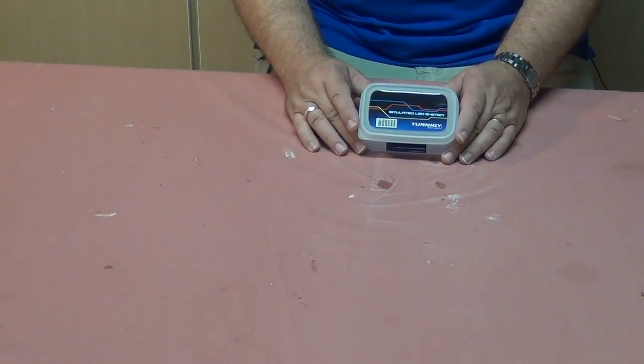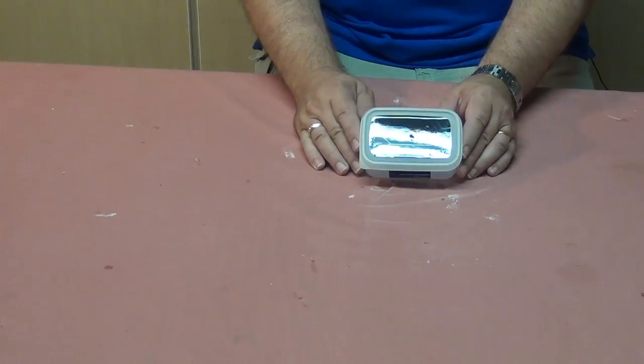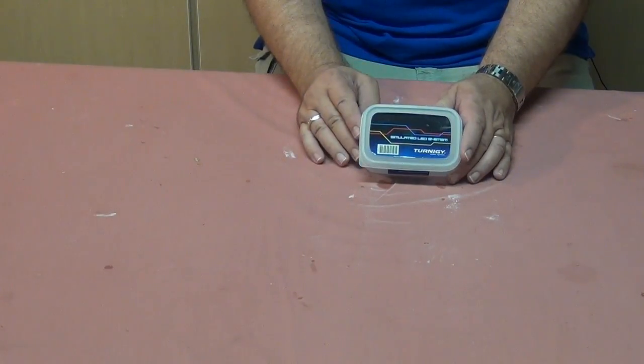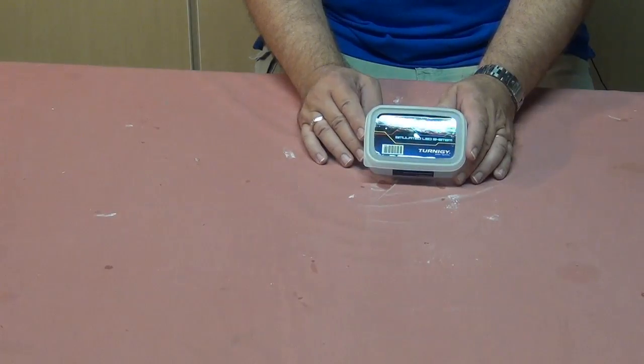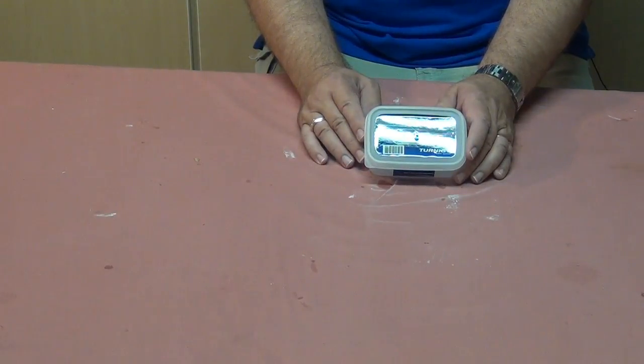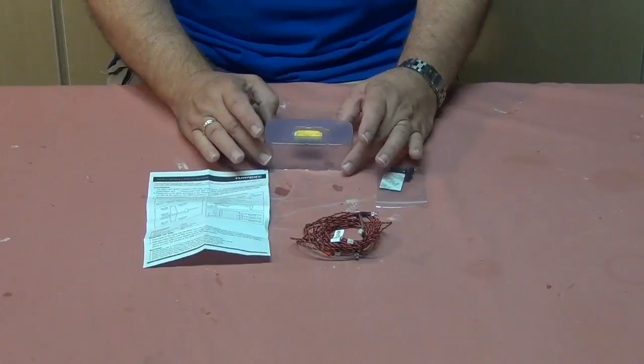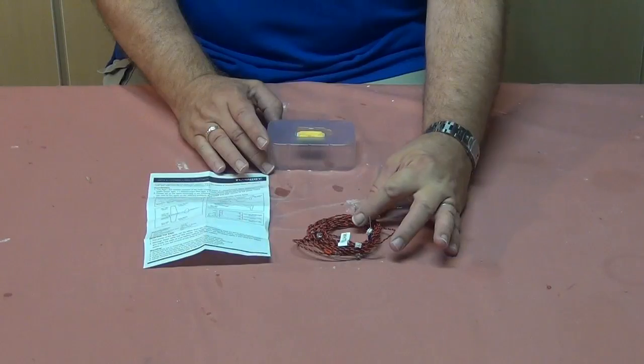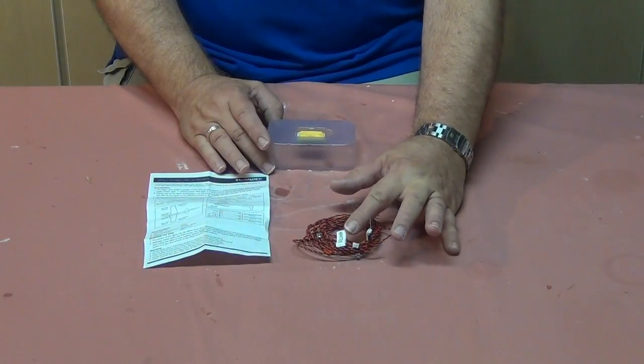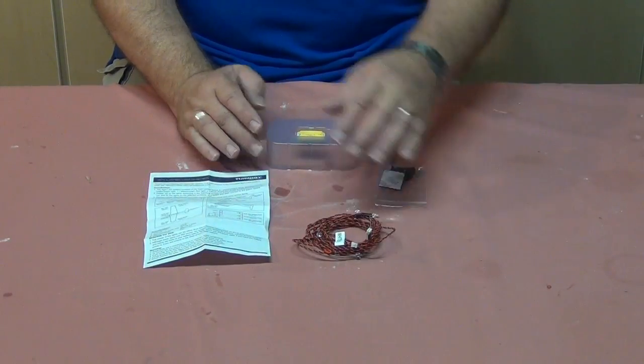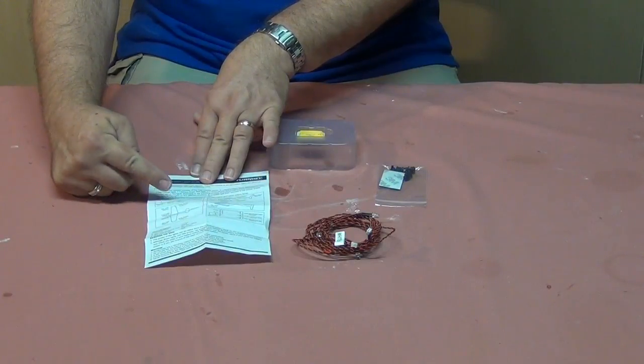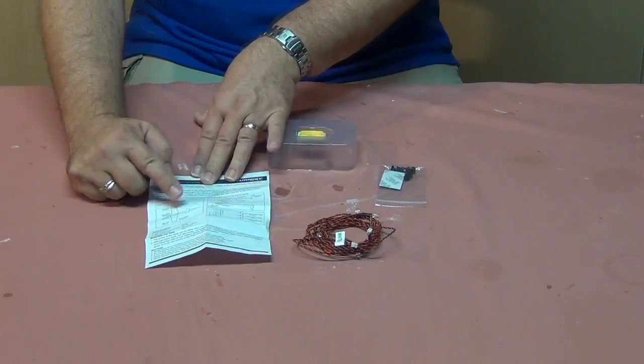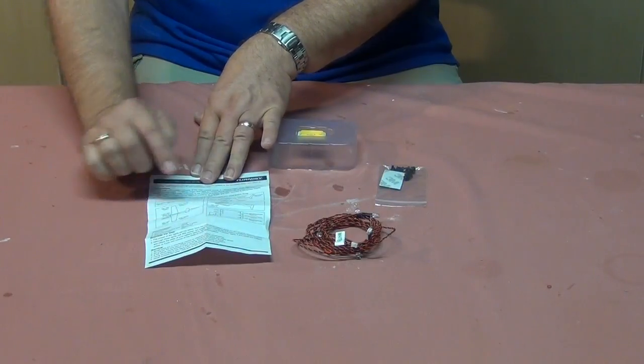We're going to start the installation of our light kit by taking it out of its container. It's a nice little box. We'll get an inventory of what we have here. In this case we've got a coil of wires with the connectors and the LEDs on them. They're all labeled. Some of them are double, some of them are singles. We can see in the instructions what they're going to go to. Singles to the nav lights, doubles to the beacon, and so forth.